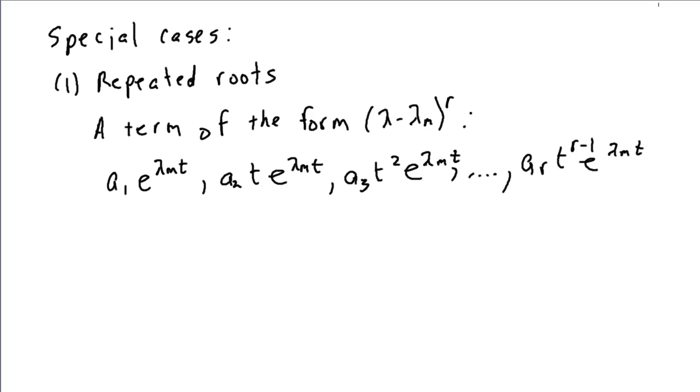The complex roots will always appear in conjugate pairs. So, that means if we get one term in the factorization of lambda minus alpha minus j beta, we'll also get another term in the factorization. That's lambda minus alpha plus j beta.